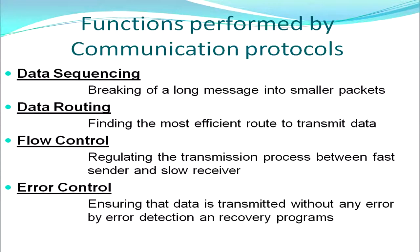The next function is flow control. It is not necessary that a sender and a receiver are on the same platform or working at the same speed. This mismatch of speeds is managed by protocols — it regulates the transmission process between a fast sender and a slow receiver or vice versa. The last function performed by communication protocols is controlling errors. While transmitting data, some packets might be lost or transmission might not be proper. A protocol ensures that data is transmitted without any error, using various error detection methods and recovery programs.